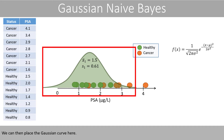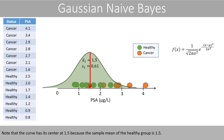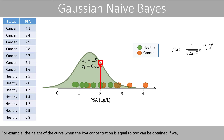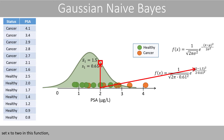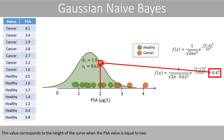We can then place the Gaussian curve here. Note that the curve has its center at 1.5 because the sample mean of the healthy group is 1.5. For example, the height of the curve when the PSA concentration is equal to 2 can be obtained if you set x to 2 in this function and do the math. This value corresponds to the height of the curve when the PSA value is equal to 2.